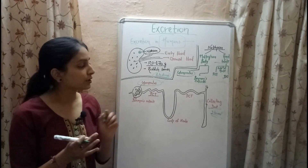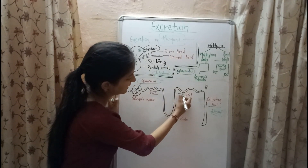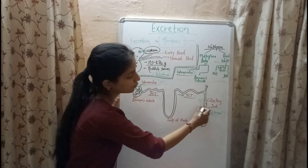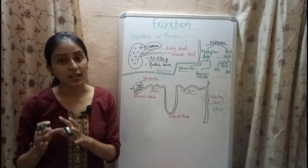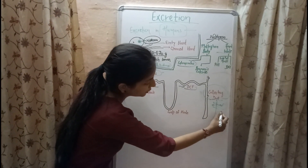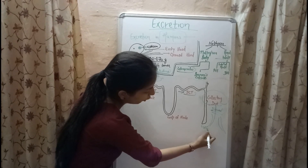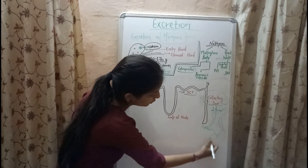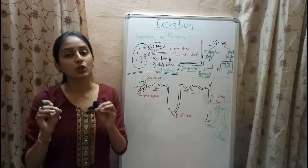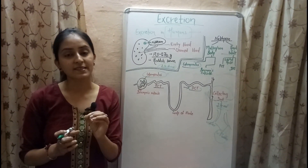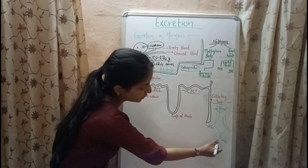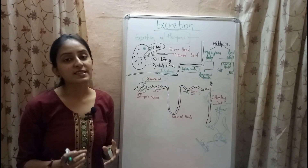From the loop of Henle, waste products — urea, excess salt, and excess water — pass to the DCT (distal convoluted tubule), and from the DCT, urine finally passes to the collecting duct, where all urine is collected. From the collecting duct, urine passes to the ureters, then to the urinary bladder, where it is stored. Relaxation of muscles surrounding the urinary bladder leads to the release of urine through the urethra.